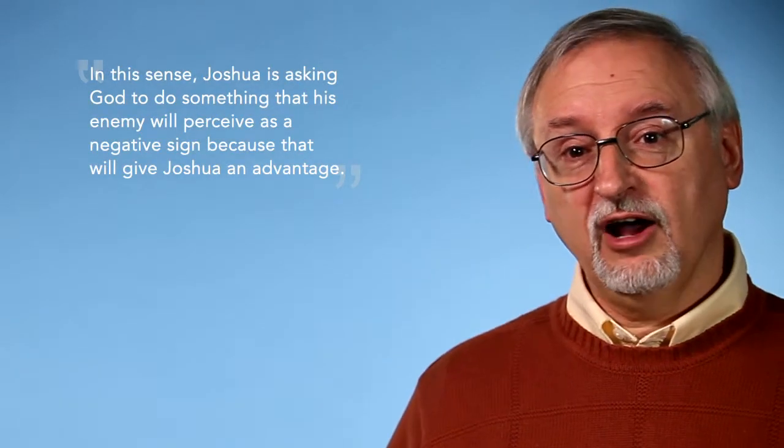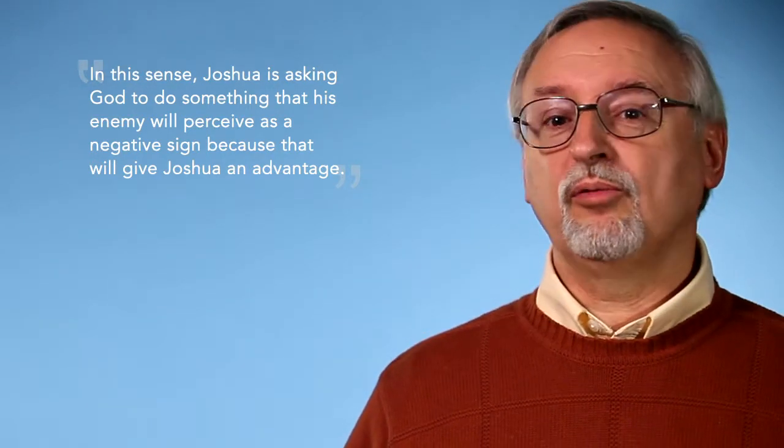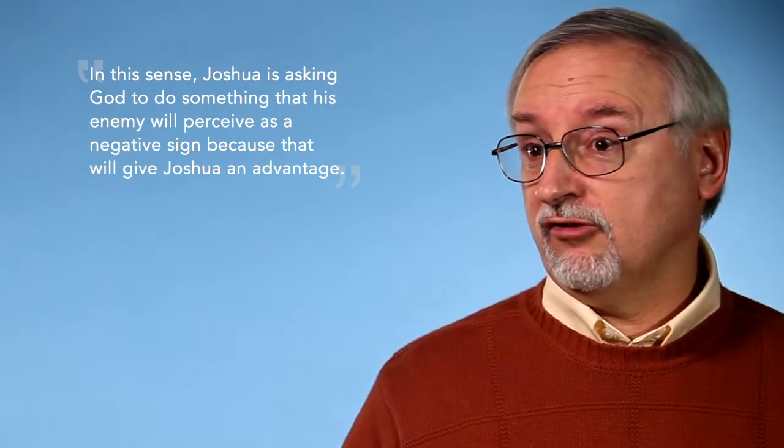I would suggest to you that Joshua knows precisely what they're going to be doing. Joshua doesn't necessarily believe the omens himself. I don't think that he does, but he knows his enemy and he knows that they will be totally demoralized if they receive a negative omen. So that's what he prays. He prays for the stopping and standing of the sun and moon because that would give his enemies a negative omen for the day. They would observe that and say, I hope we don't have to fight today or maybe we shouldn't even fight today. It looks like a bad day, which would be just the point where Joshua and his armies hiding in ambush would come streaming over the hills in the unsuspected attack. In this sense, Joshua is asking God to do something that his enemy will perceive as a negative sign because that will give Joshua an advantage.